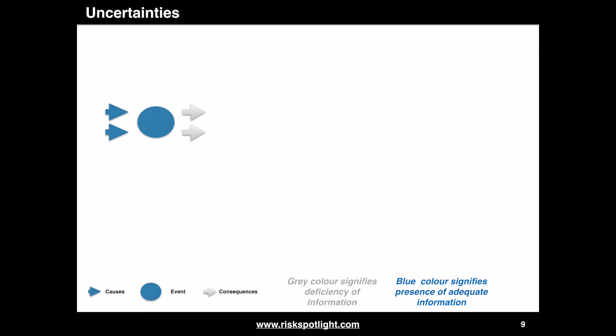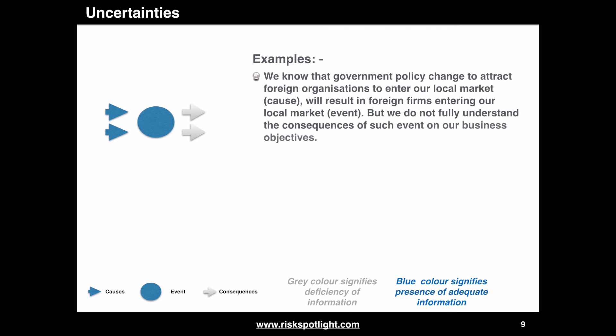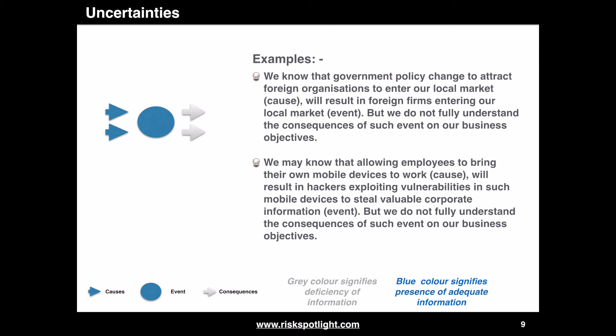The next variation covers the situation where we do have adequate information about causes and events, but we do not have adequate information about consequences. For example, we know that a government policy change to attract foreign organizations into our local market will result in foreign firms entering our local market, but we do not fully understand the consequences of such an event on our business objectives. Similarly, allowing employees to bring their own mobile devices to work may result in hackers exploiting vulnerabilities in such devices to steal valuable corporate information, but we do not fully understand the consequences.